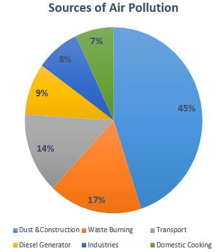Some reports, including one by the World Health Organization, claim 300,000 to 400,000 people die of indoor air pollution and carbon monoxide poisoning in India because of biomass burning and use of chullas. Air pollution is also the main cause of the Asian brown cloud, which is delaying the start of the monsoon.